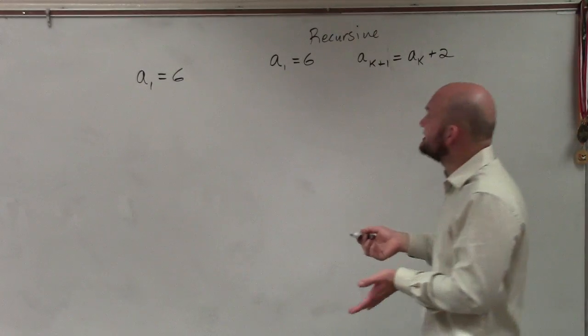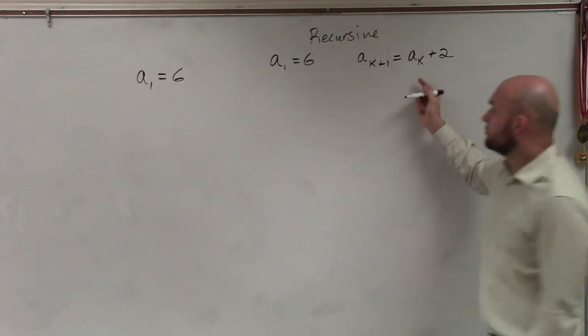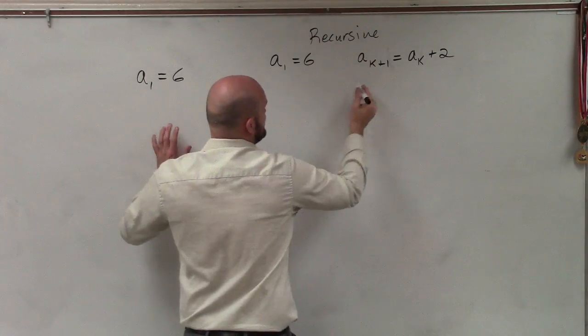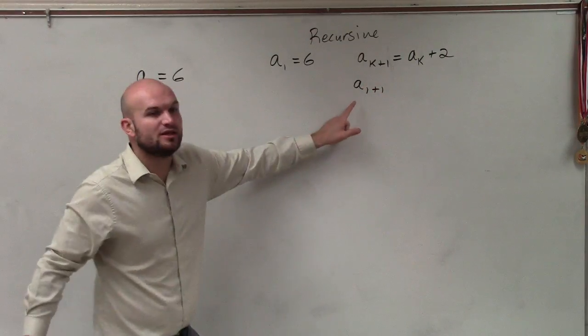So the next one, what you're going to want to do is now we take a sub one and we plug it back into our rule. So when I plug in a sub one back into this rule, I have a sub one plus one, right? We're plugging in the one in for the k.